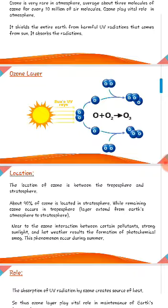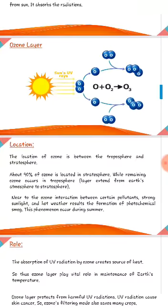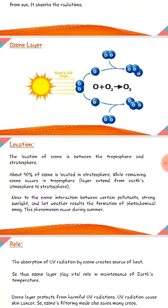Some oxygen molecules, which contain two atoms, absorb energy from the sun's UV rays and split to form single oxygen atoms. These single atoms then mix with the remaining two-atom oxygen molecules to form oxygen molecules with three atoms, creating the ozone layer.